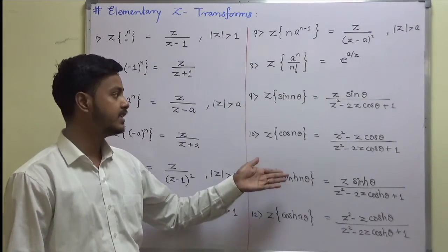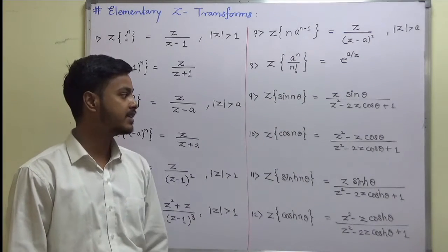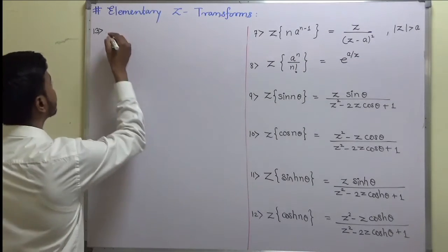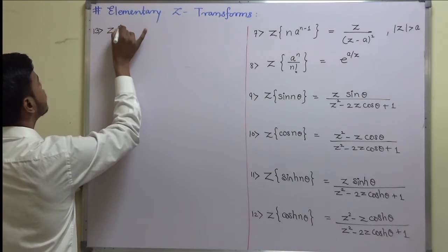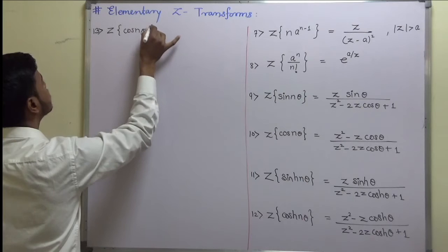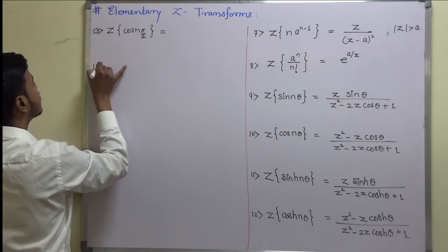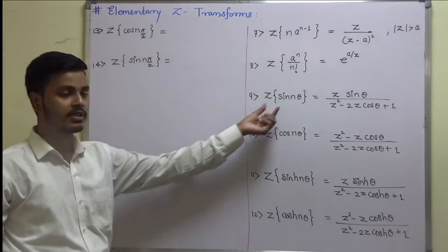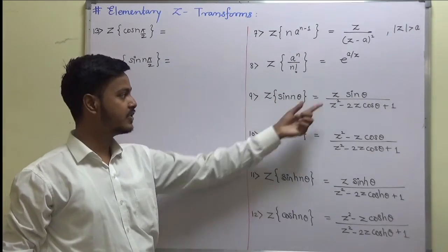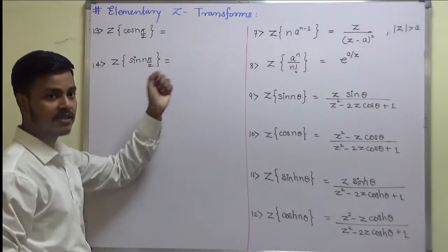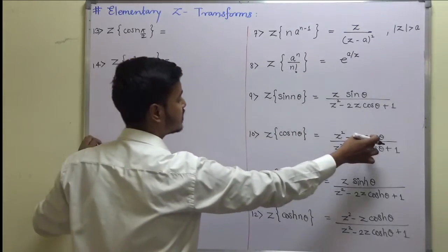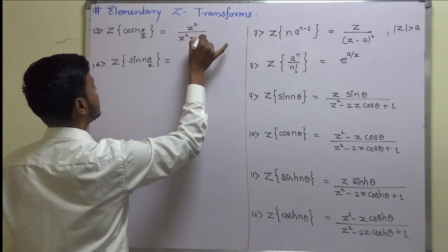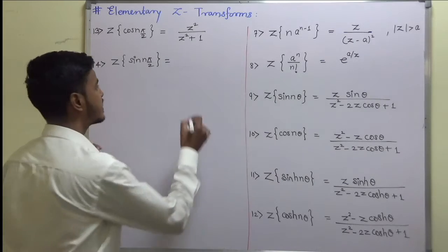Similarly you can write down Z transforms of a^n·sin(nθ) and a^n·cos(nθ). A special case: Z transform of cos(nπ/2) — using the general cosine formula with θ=π/2, the sine and cosine terms drop out giving z²/(z²+1). And Z transform of sin(nπ/2) is z/(z²+1).